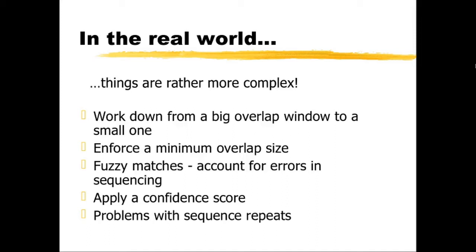In the real world, doing this sort of thing is a little bit more complex than the example I've shown. We have to make sure we have as big an overlap as possible. We have to enforce some sort of minimum overlap size, given that we have four different DNA bases. If we only overlapped one base, there's a one in four chance we would do that simply at random. If it's two bases, one in 16, and so on. We also have to allow some level of fuzzy matching — in other words, accounting for errors in the sequencing, because the ends of segments quite often have sequencing errors.